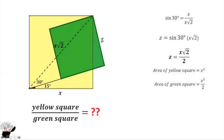So from here, the ratio of the yellow to the green is 2, and that is the answer.